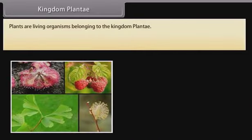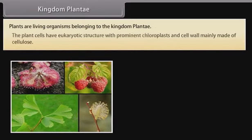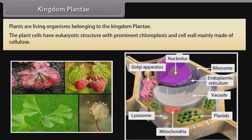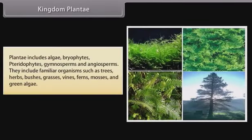Plants are living organisms belonging to the kingdom Plantae. The plant cells have eukaryotic structure with prominent chloroplasts and cell wall mainly made of cellulose. Plantae includes algae, bryophytes, pteridophytes,